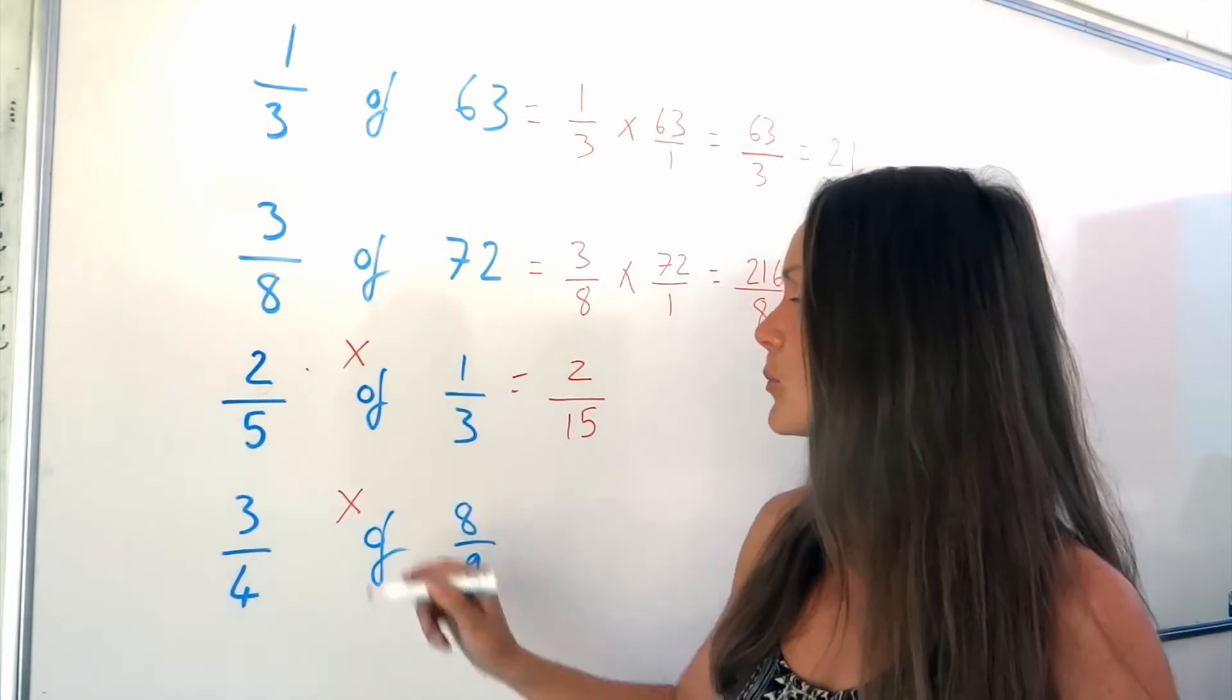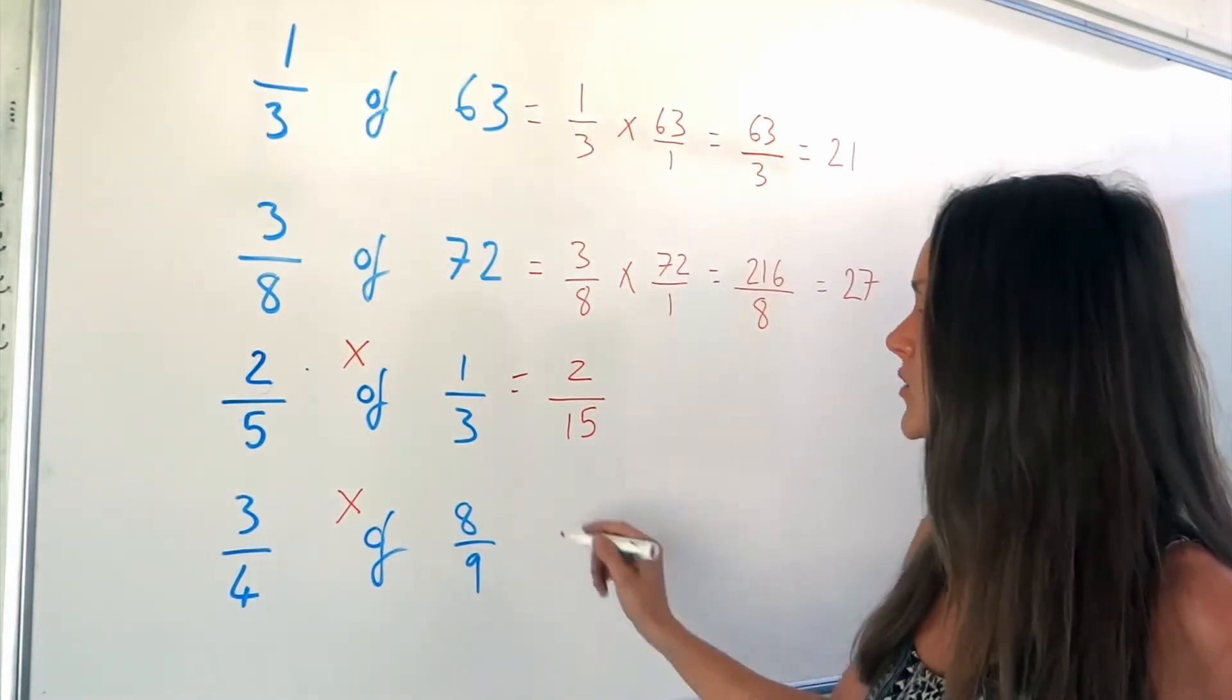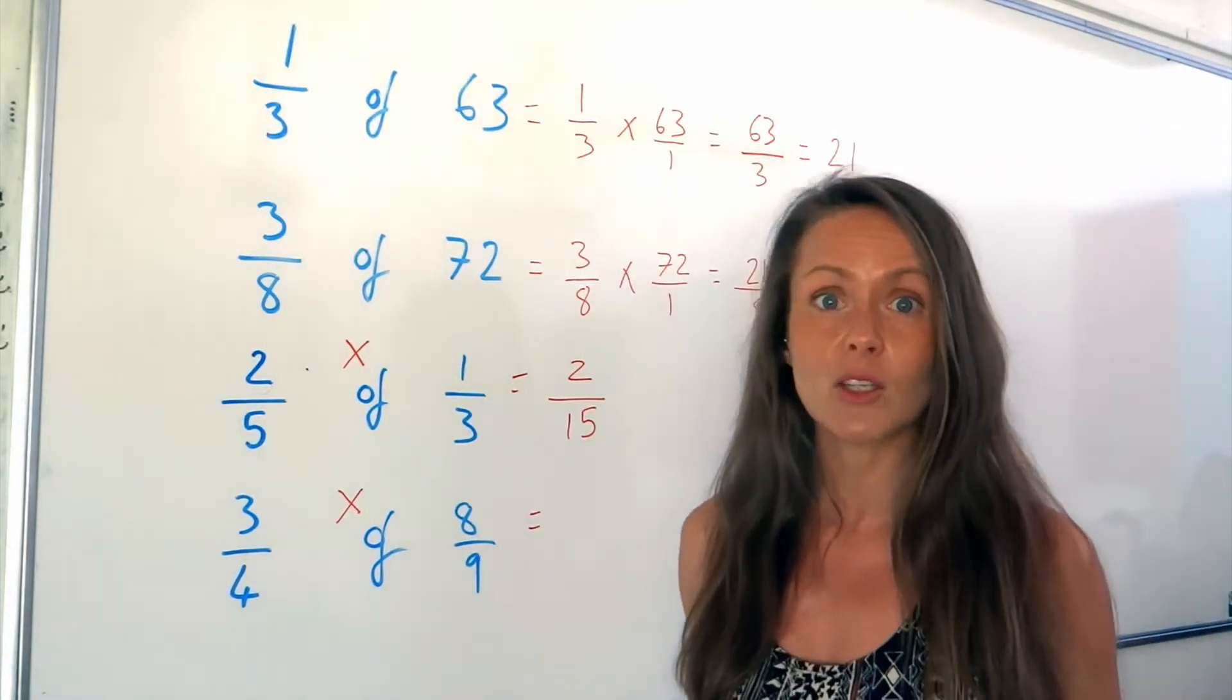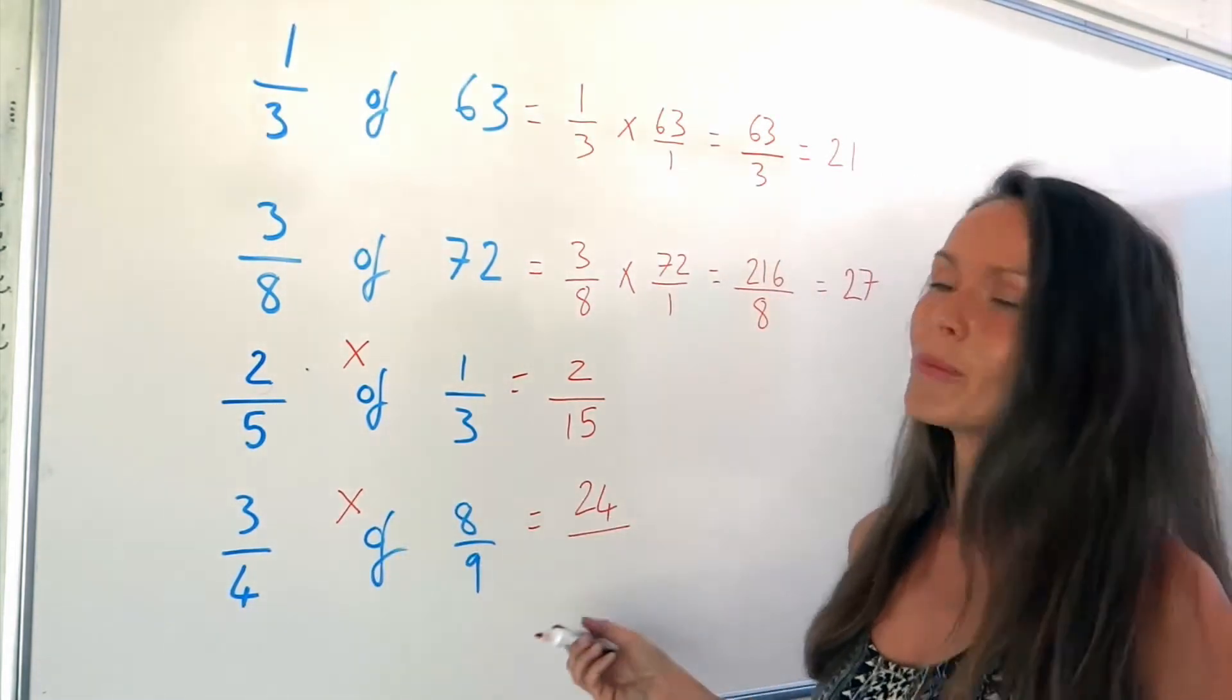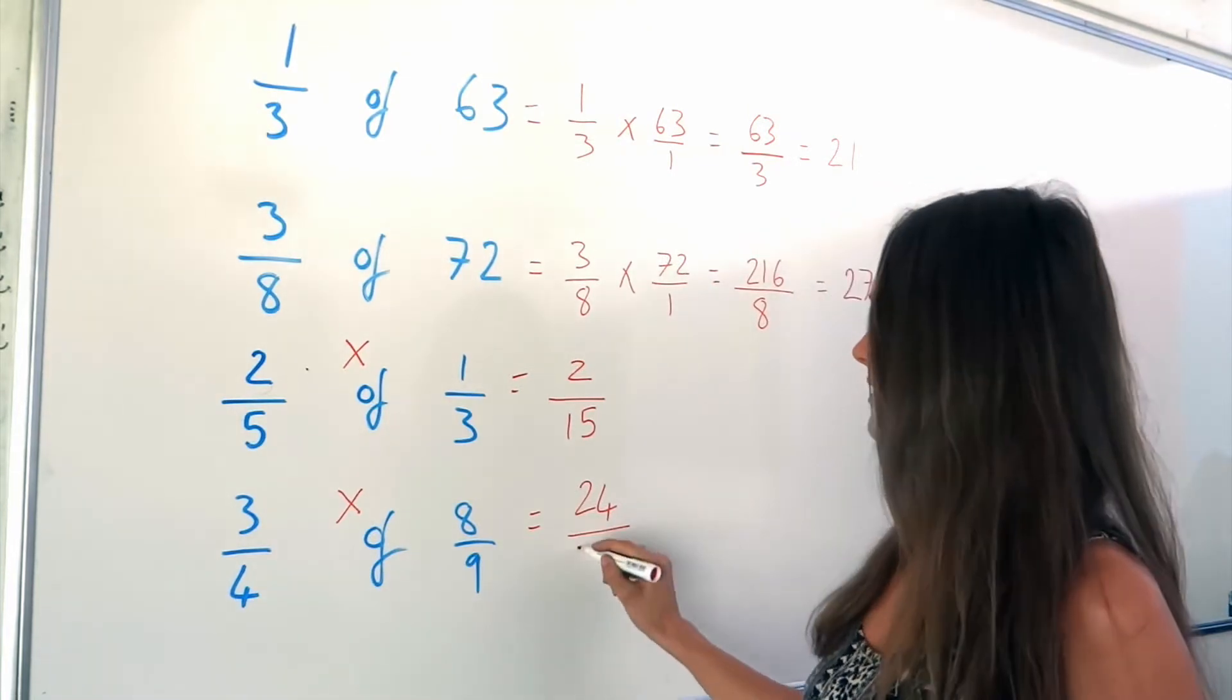Now, the last one. Again, I'm multiplying the two fractions together. So I'm going to start by multiplying the numerators. So 3 times 8 is 24. And then the denominators. So 4 times 9 is 36.